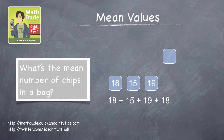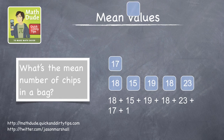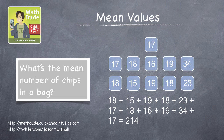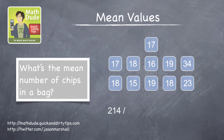We imagined we had 11 imaginary bags of chips, and we calculated the mean by adding up all the chips in all the bags, and then dividing this total by the number of bags. The resulting number is the mean, which in our problem turned out to be about 19.45. That squiggly line there means approximately.